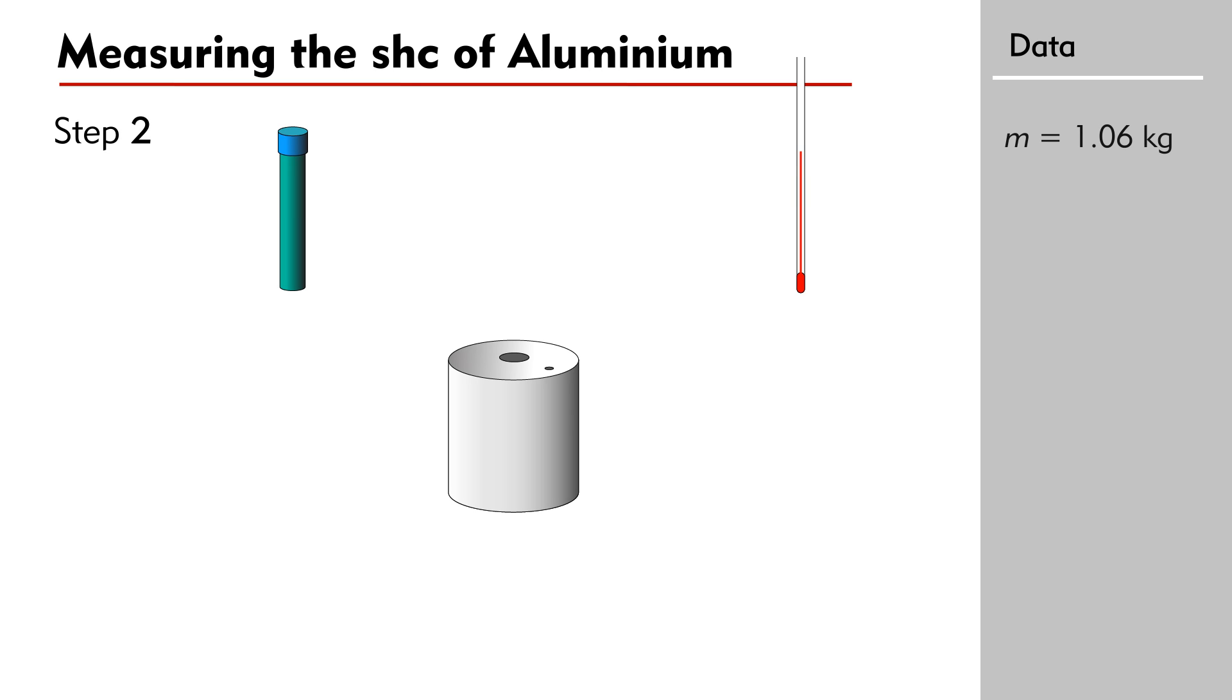The aluminum block is a cylinder with two holes drilled on the flat surface, one for holding the immersion heater and the other for holding the thermometer. Now, insert the immersion heater and the thermometer into the aluminum block and apply some oil to the holes. This improves the heat conduction between the metal and apparatus.